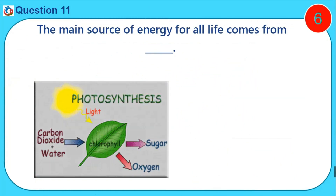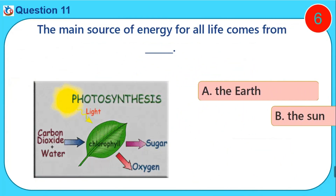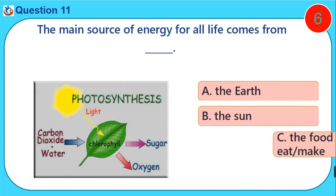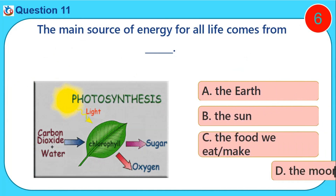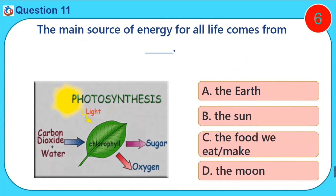The main source of energy for all life comes from dash. A. The heart. B. The sun. C. The food we eat or make. D. The moon.